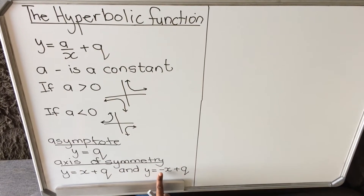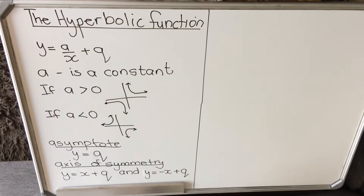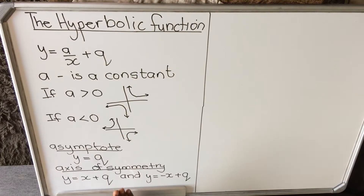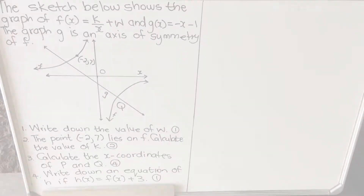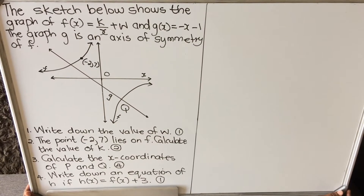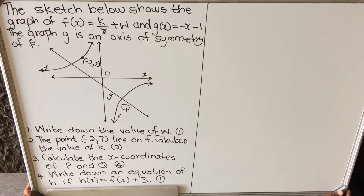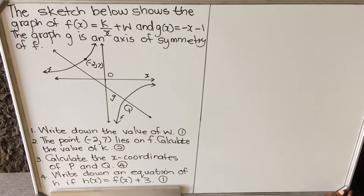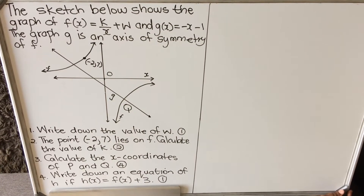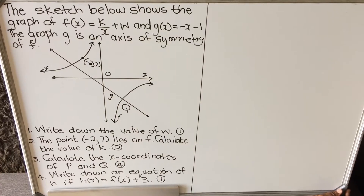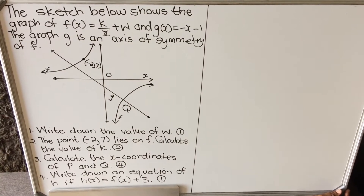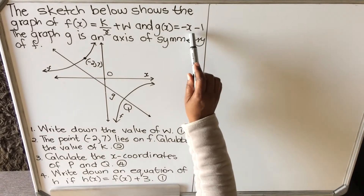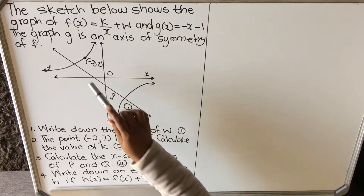I'm going to take a question from a previous paper and work through it with you. This example is from a question paper, November 2017. The question says the sketch shows the graph of f(x) equals k over x plus w, and g(x) equals negative x minus 1. The graph of g is an axis of symmetry of f. Looking at the graph, it is in the second quadrant and the fourth quadrant, so we expect k to be negative.